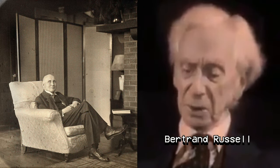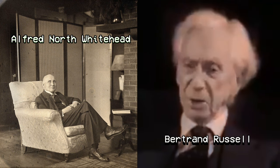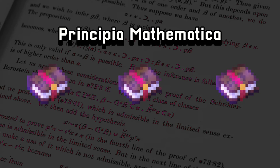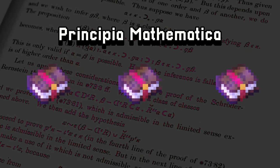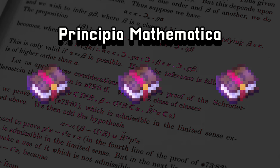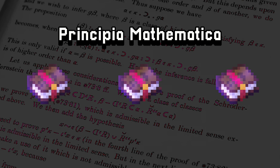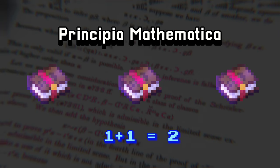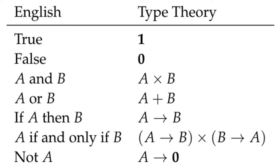Bertrand Russell, along with his colleague Alfred North Whitehead, made the most ambitious attempt to realize Hilbert's program with the Principia Mathematica, published in three volumes between 1910 and 1913. The work was so meticulous that it took over 300 pages just to prove that 1 plus 1 equals 2. To address Frege's paradox, Russell and Whitehead introduced type theory, a system that divided formal languages into hierarchical levels, where each level could reference those below it but not its own or higher levels. This approach resolved self-referential paradoxes by effectively prohibiting self-reference.